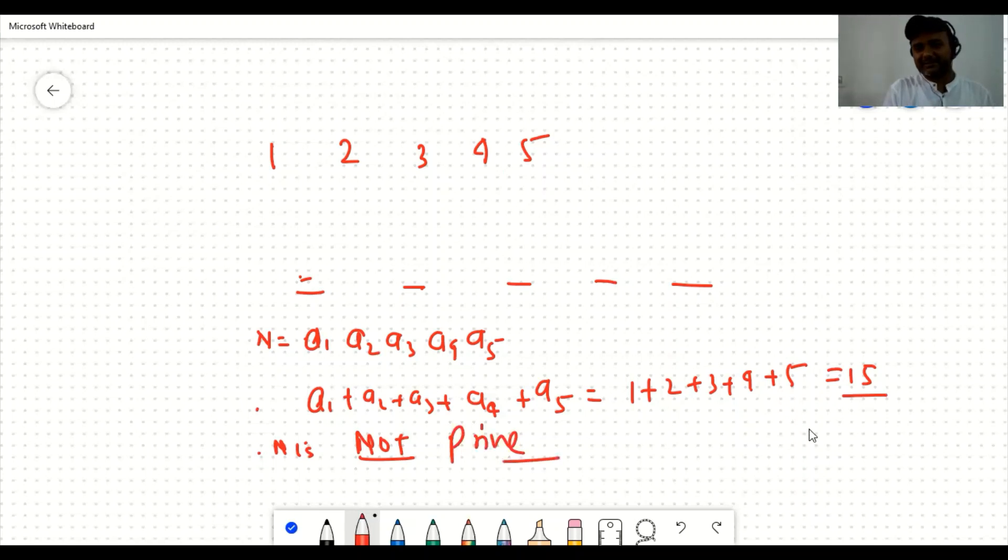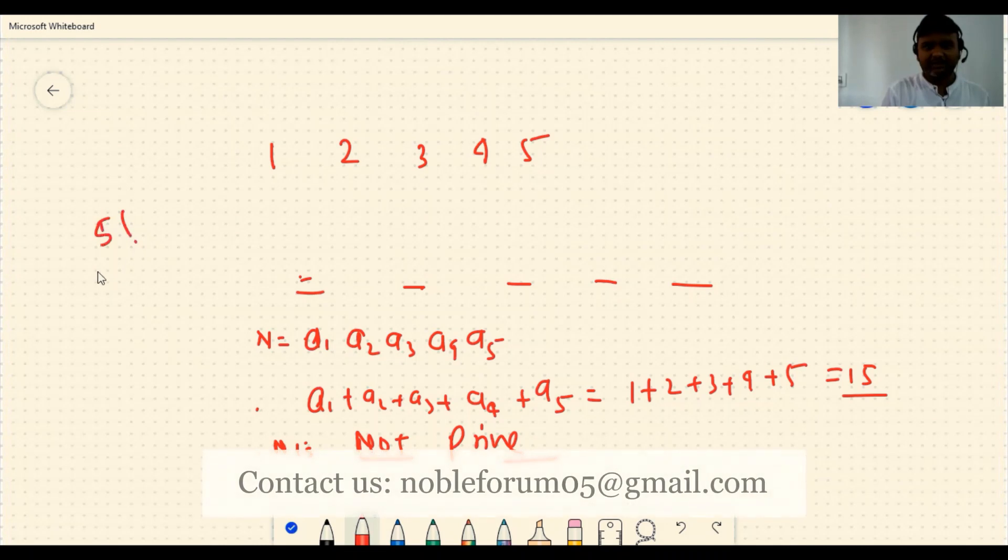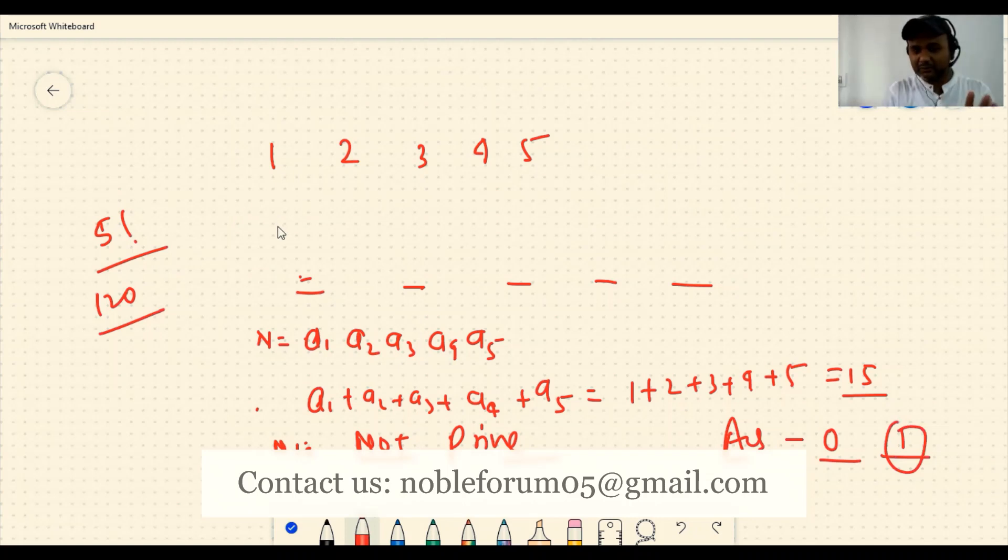This will not be prime because the sum of digits is divisible by 3. So if you make a 5-digit number using 1, 2, 3, 4, 5 without repeating any digit, you will not get prime numbers. You will get many 5-digit numbers - if you have studied permutation and combination, there will be 5 factorial numbers, that's 120 numbers you will get. But out of these 120 numbers, not a single number will be prime - these are all composite numbers. So the answer is zero.